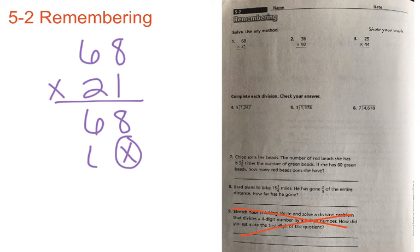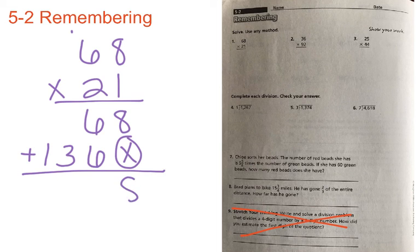2 times 8 is equal to 16. Put down your 6. Carry your 1. 2 times 6 is equal to 12. Plus 1 is equal to 13. And then we're going to go ahead and add.